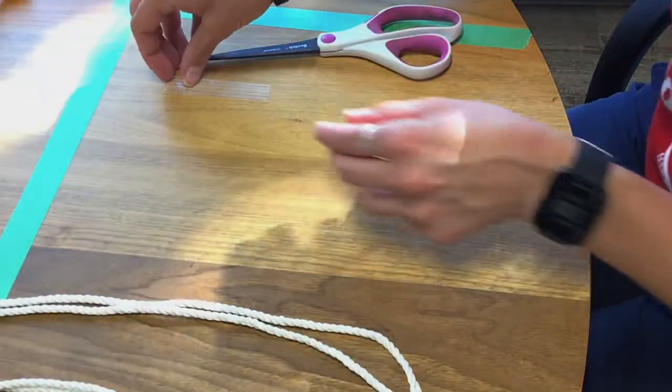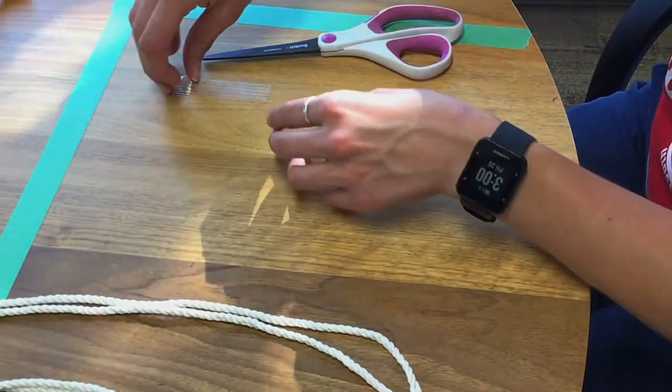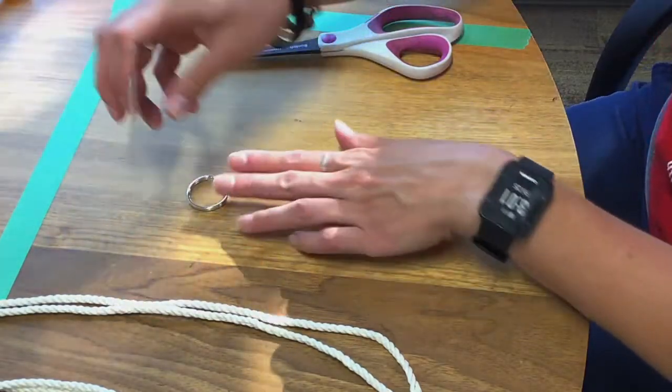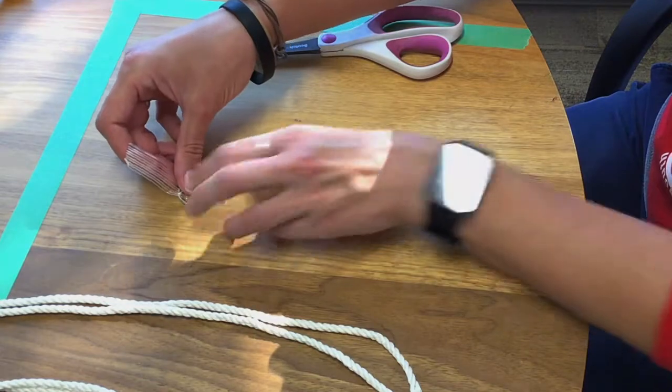We are going to start off with our tape and our large jump ring and securing that down on a surface. We will be tightening and pulling on the rope as we work.